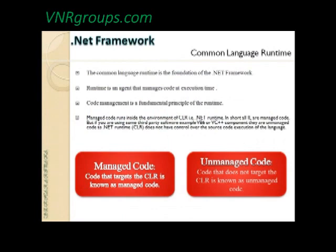The Common Language Runtime is the foundation of the .NET framework. Runtime is an agent that manages code execution. CLR interacts with the operating system — it manages threads, processes, memory allocation and de-allocation. In other words, it's an intermediate runtime to execute a .NET program. It needs to translate the intermediate language and perform policy checks on the security side, like code access security.